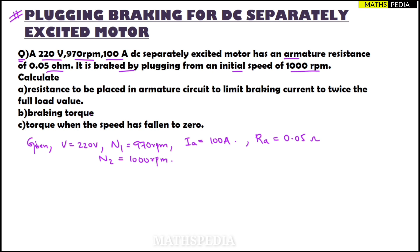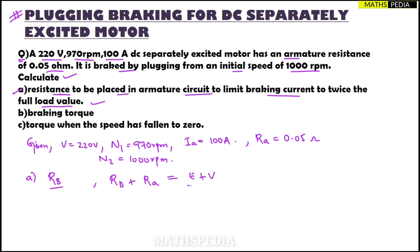In part one, we have to calculate the resistance Rb to be placed in the armature circuit to limit the braking current to twice the full load value. The formula is: Rb + Ra = (E + V) / Ia. This is similar to the basic resistance formula V/I, with the additional back-EMF term E.